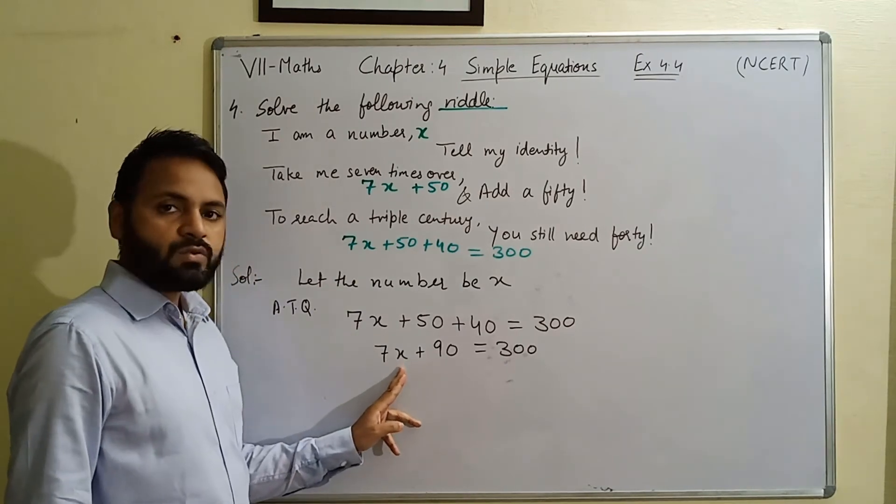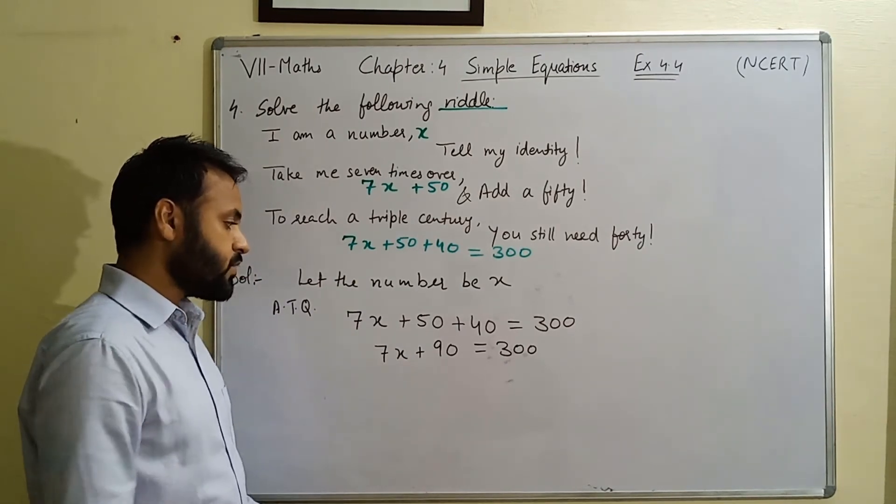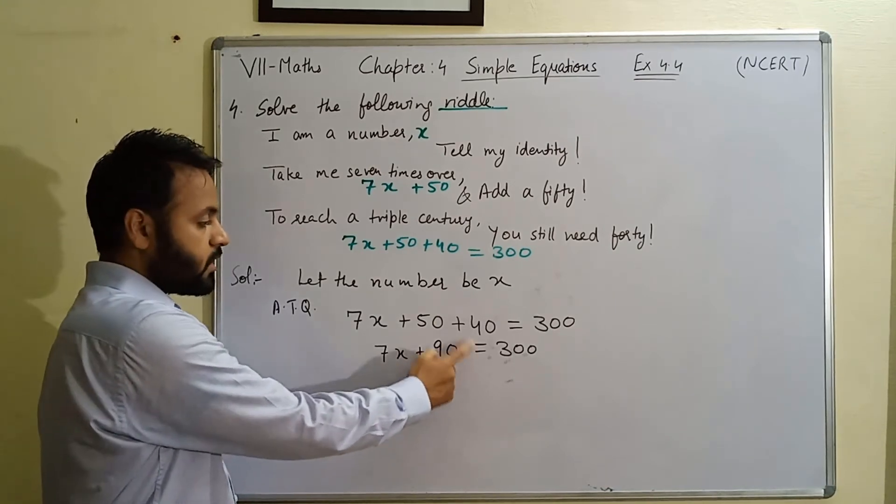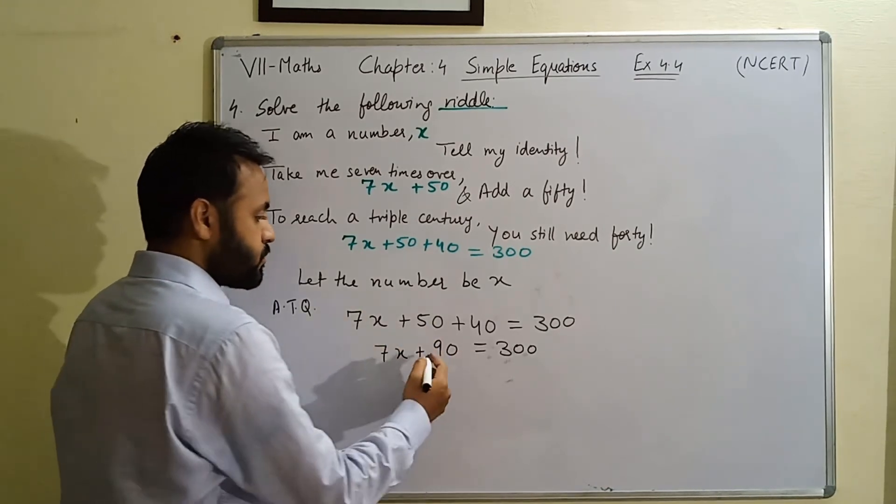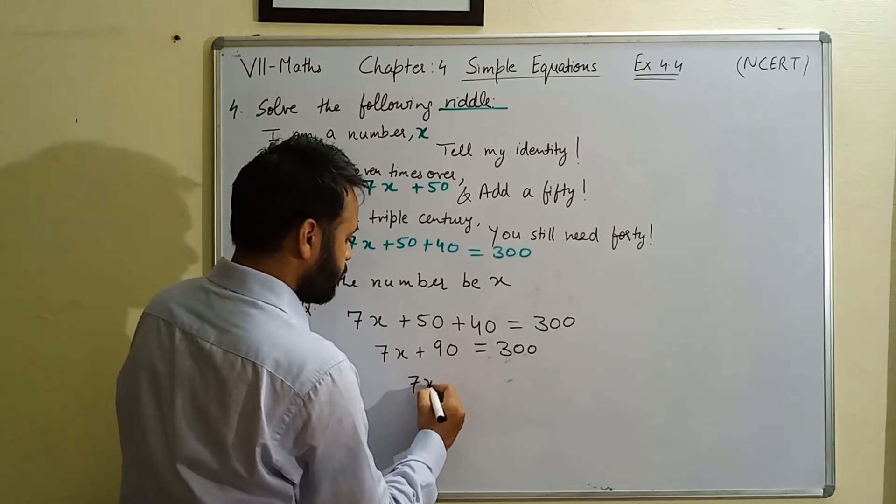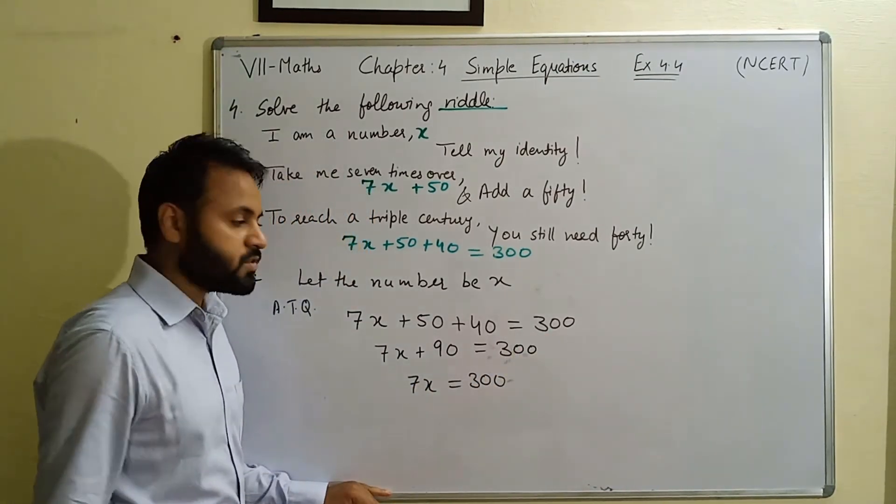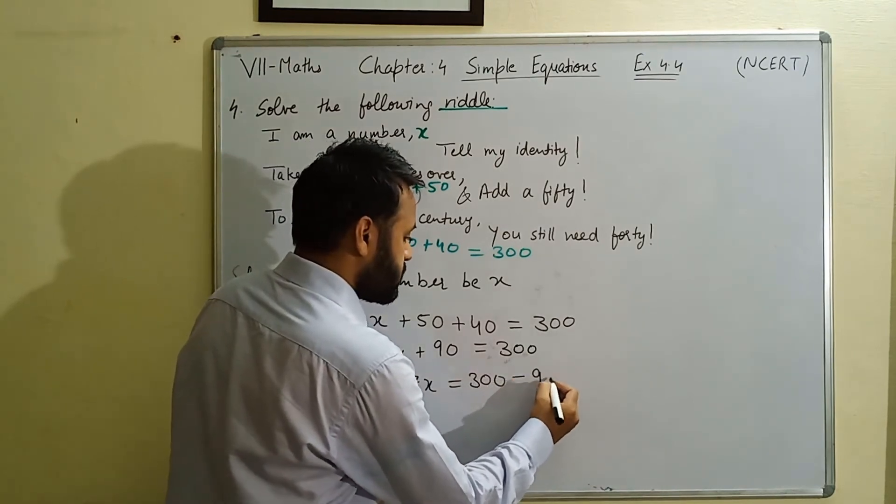In order to find the value of this variable, hame extra terms ko shift karna hai. Toh extra term humare paas yeha pe kitni - total 2 terms hai. Extra term is this 90 here. So in order to get rid of this, we shift this 90 to the right hand side. Toh is 90 ko jab right hand side shift karenge.